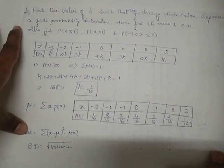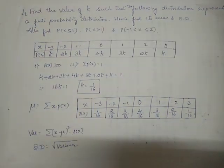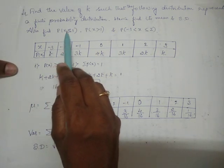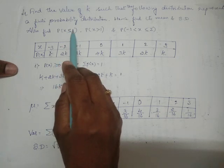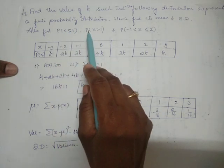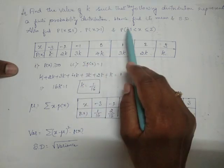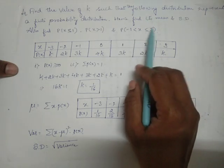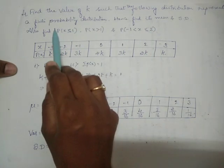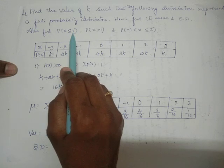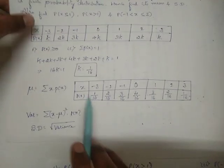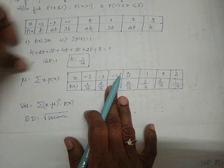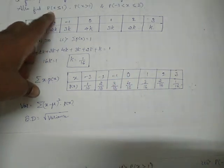The next part of this problem is to calculate P(X ≤ 1), then P(X > 1), and P(X lies between −1 and 2, including 2). Let us start with P(X ≤ 1). We have the probability distribution table and we will use it to find the value of P(X ≤ 1).